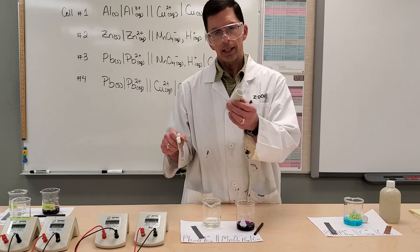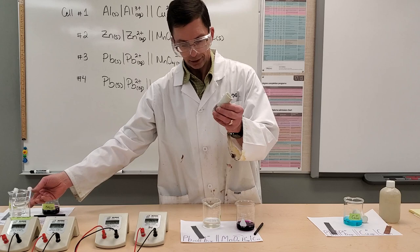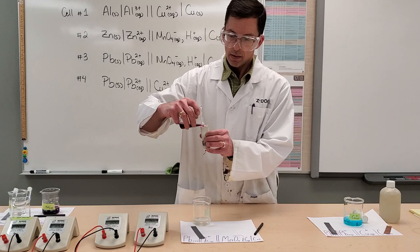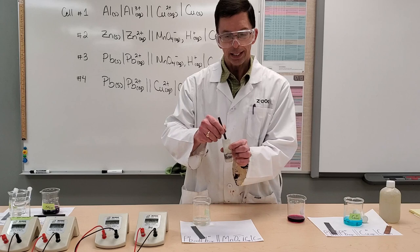So an alternate design to the salt bridge is the porous cup. And it's going to allow for ion migration. This is a one beaker design, pouring some permanganate ions into the porous cup. And to complete this half cell, I put my inert electrode, my carbon electrode, into the porous cup containing permanganate ions.